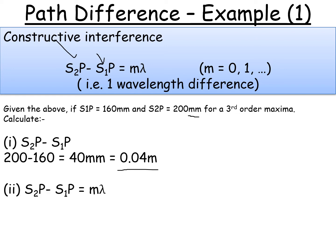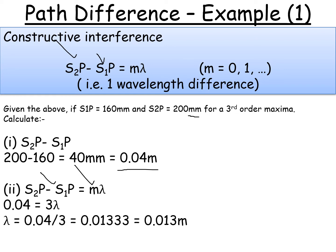To get the wavelength, we use our answer from part one — the path difference. We know it's a third order maxima, so we know what m is. Substituting in and rearranging, we get 0.0133, which rounds to 0.013 metres. That's how you do constructive interference using path difference.